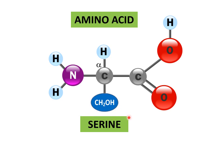Thus, all amino acids have an amino group, a carboxylic group, and a hydrogen atom, all attached to the alpha carbon atom — which is basically the carbon atom of the methane molecule. The only thing that varies is this alkyl group, and the variation in this alkyl group gives rise to different types of amino acids. Just by a change in this alkyl group, 20 different amino acids are found in nature.